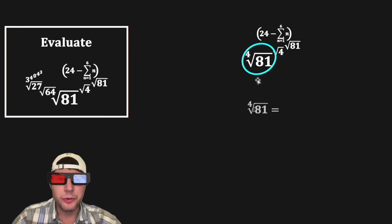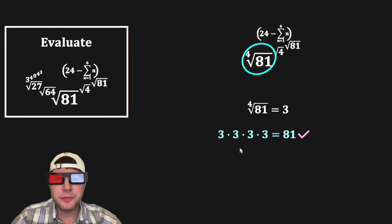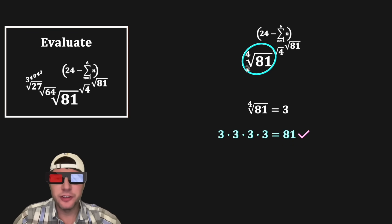Now we get to do the fourth root of 81. This ends up being 3, because 3 times 3 times 3 times 3 is equal to 81. So the fourth root of 81 changes into 3.